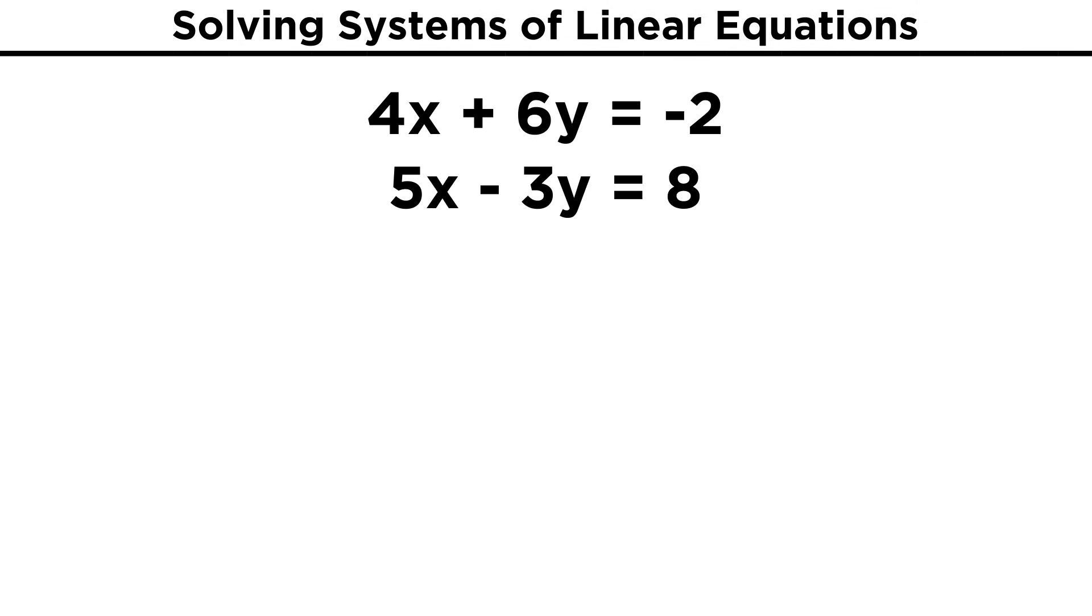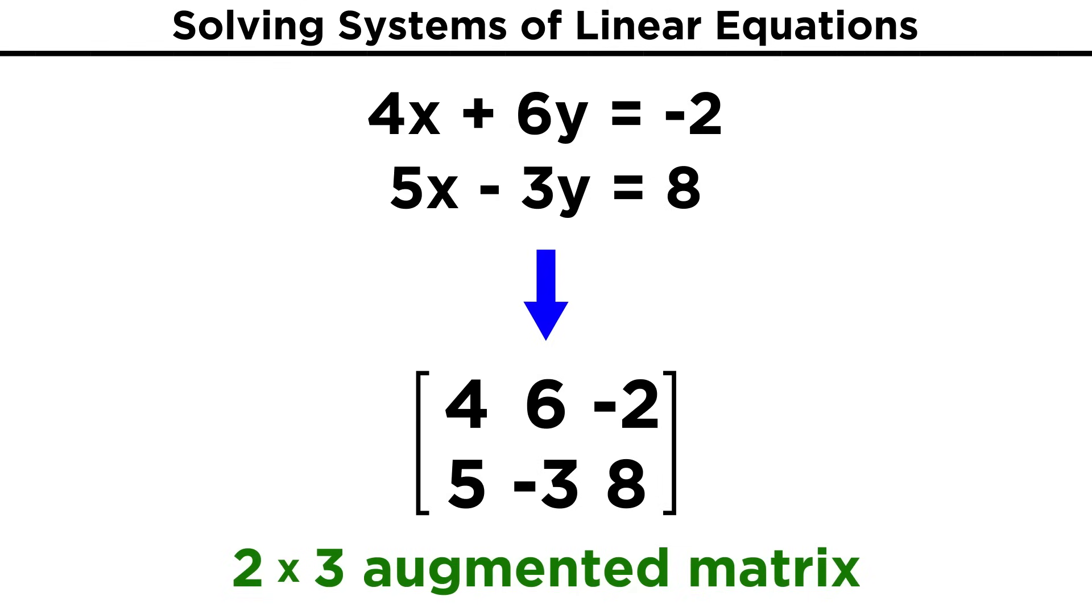Say we have the following system of two linear equations: 4x + 6y = -2 and 5x - 3y = 8. Let's go ahead and generate the corresponding augmented matrix, which will be two by three, with 4, 6, and -2 in the first row, and 5, -3, 8 in the second row.